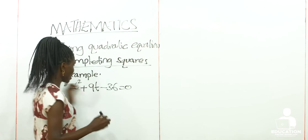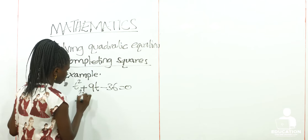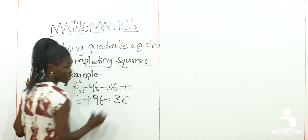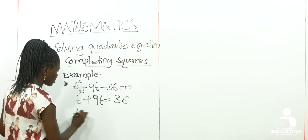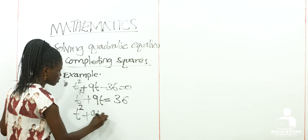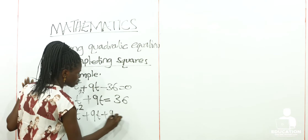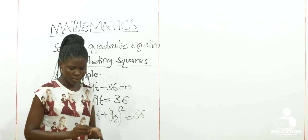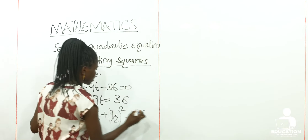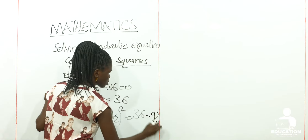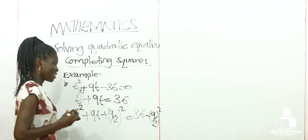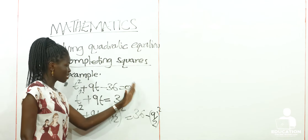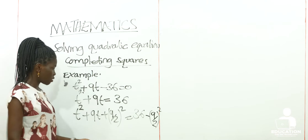Let us take this to the other side, whereby we are going to have t squared plus 9t is equal to 36. Now we are going to have t squared plus 9t plus (9/2)² is equal to 36 minus (9/2)². We can either choose to work it all on one side, then take it to the other side, or start by doing this and solve it easily.